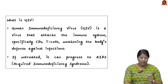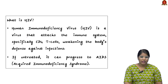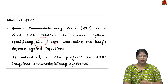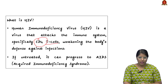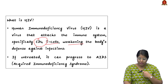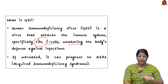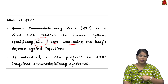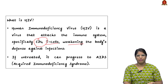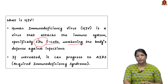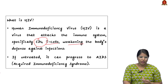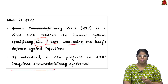To be specific, it attacks the CD4 T cells, which produce immunity. When the immunity is weak, the body's defense system will be weaker and the body itself will become prone to a lot of infections. So if HIV is not treated properly, it will lead to AIDS, which is Acquired Immunodeficiency Syndrome.